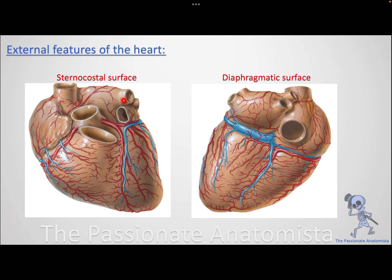As you know from high school, we have four chambers: right atrium, left atrium, right ventricle, and left ventricle. The atria and ventricles are divided by grooves. The groove separating the two atria from the two ventricles is visible from the posterior aspect — it is the coronary sinus, also called the atrioventricular groove. Anteriorly, this groove is covered by the pulmonary trunk and aorta.